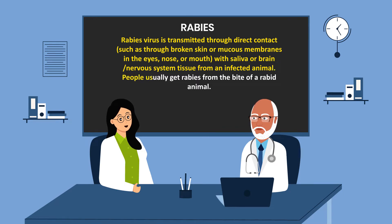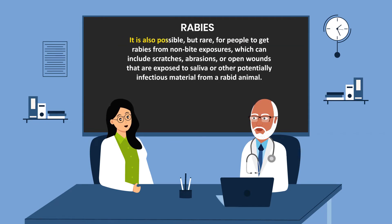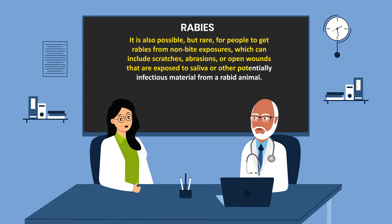People usually get rabies from the bite of a rabid animal. It is also possible but rare for people to get rabies from a non-bite exposure, which can include scratches, abrasions, or open wounds that are exposed to saliva or other potentially infectious material from a rabid animal.